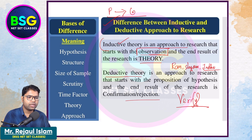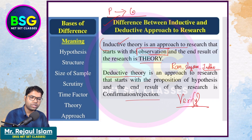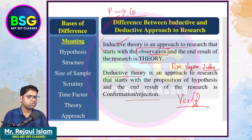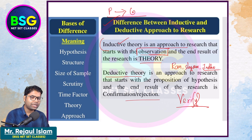For example: all men are mortal. Every human being — and Ram is a man — therefore Ram is mortal. Ram is mortal. So, Ram is mortal.